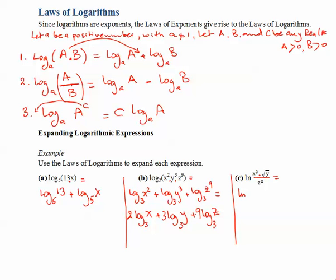So for the multiplication, I'm going to use the first law, which says the logarithm of product of numbers is the sum of the logarithms of numbers. So ln x to the third becomes a sum, plus ln square root of y. And then I use the second law, which says that the logarithm of a quotient of numbers is the difference of the logarithms. So minus ln z squared.